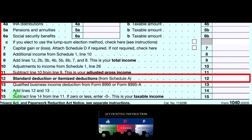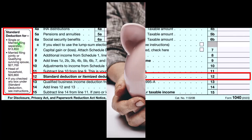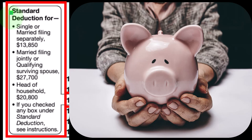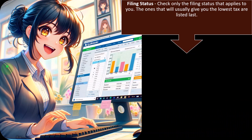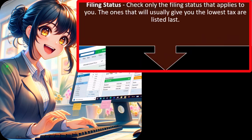Looking at the actual tax form, the standard deduction appears on line 12. For a single filer it's $13,850. You can double that to get the married filing jointly amount of $27,700. Head of household falls in between at $20,800. There are also additional standard deduction amounts for those over an age limit or blind. Filing status has a big impact on that portion of the tax calculation.